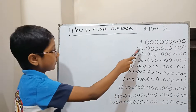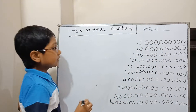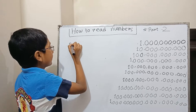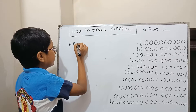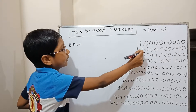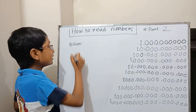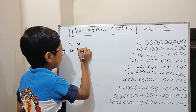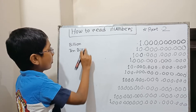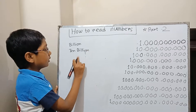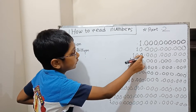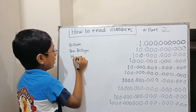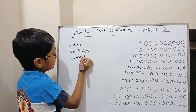So let's get started. One and nine zeros means billion. One and ten zeros means ten billion. One and eleven zeros means hundred billion.